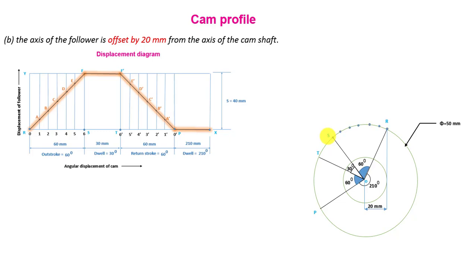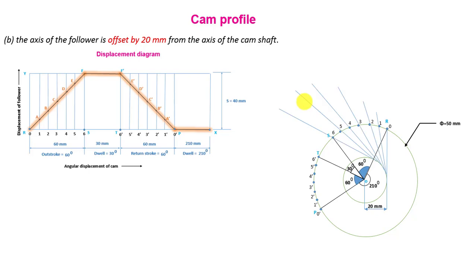Divide the outstroke angle ROS into six equal parts labeled 0, 1, 2, 3, 4, 5, and 6 for the outstroke, and 6', 5', 4', 3', 2', 1', 0' for the return stroke. From points 1, 2, 3, 4, 5, 6 and from points 1', 2', 3', 4', 5', 6', draw tangents to the offset circle and extend these tangent lines beyond the base circle.